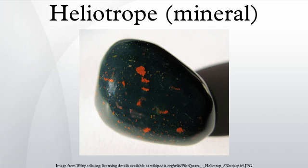The name heliotrope derives from various ancient notions about the manner in which the mineral reflects light. These are described, for example, by Pliny the Elder. Heliotrope features in one of Boccaccio's stories in the Decameron. Heliotrope is sometimes used in carved signet rings and is the traditional birthstone for March.